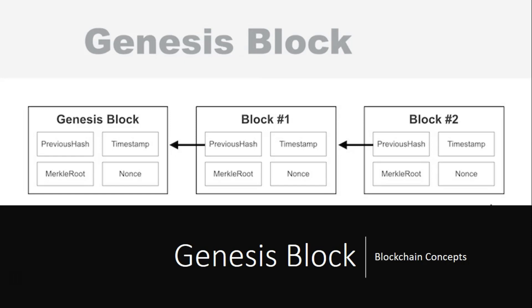We need to understand about a genesis block. A genesis block is the first block of a blockchain. Whenever you create a blockchain, it starts with the first block, so that first block is nothing but a default block which is termed as the genesis block. Modern versions of Bitcoin number it as block zero; the very early versions counted it as block one.